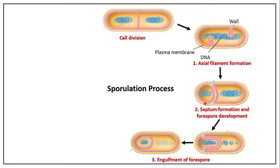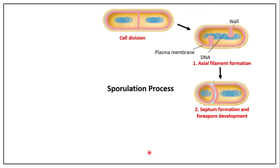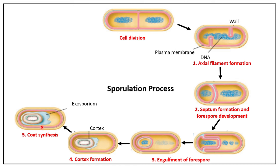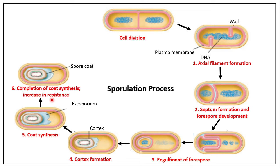The forespore is then engulfed by the expanding membrane of the mother cell. After engulfment, cortex formation begins in the space between the two membranes surrounding the forespore. Cortex formation is followed by spore coat synthesis — deposition of proteinaceous layers that provide chemical resistance.